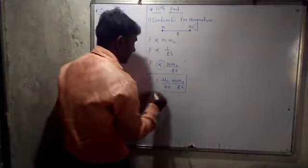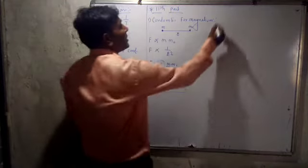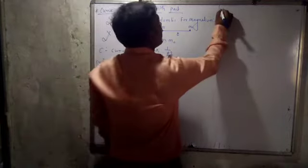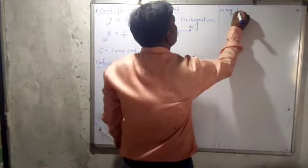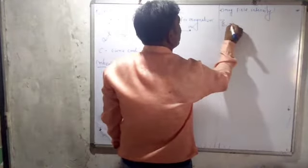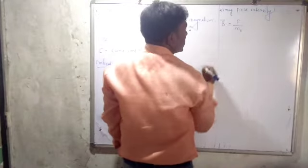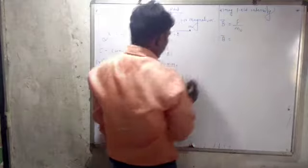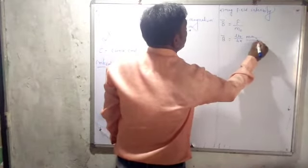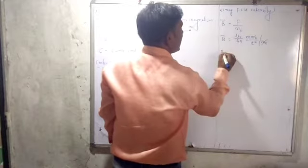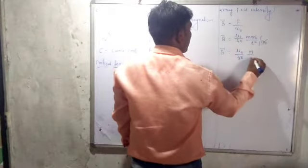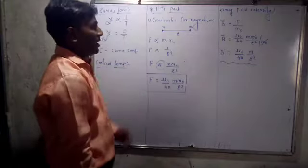This is Coulomb's law in magnetostatics. If you are interested in magnetic field intensity, magnetic field intensity B-bar is equal to force upon test pole strength M0. So B equals F upon M0, which gives mu0 upon 4pi times M into M0 upon R square, divided by M0. M0 cancels, giving magnetic field induction B equal to mu0 upon 4pi times M upon R square.